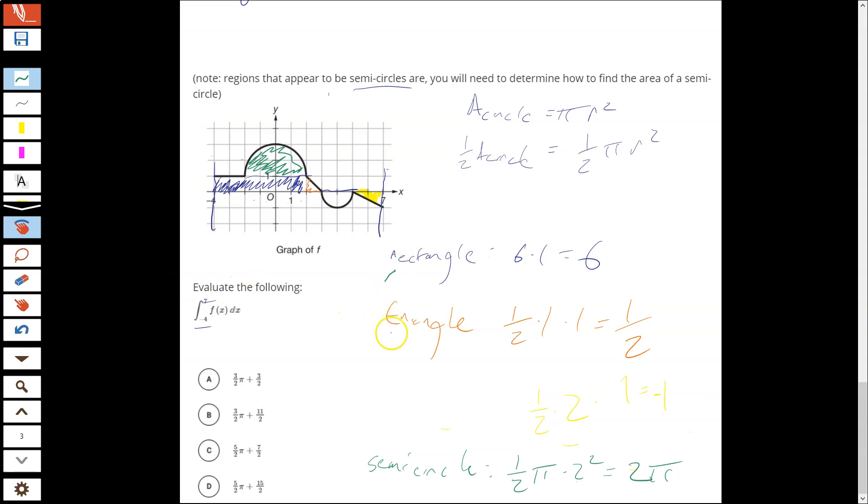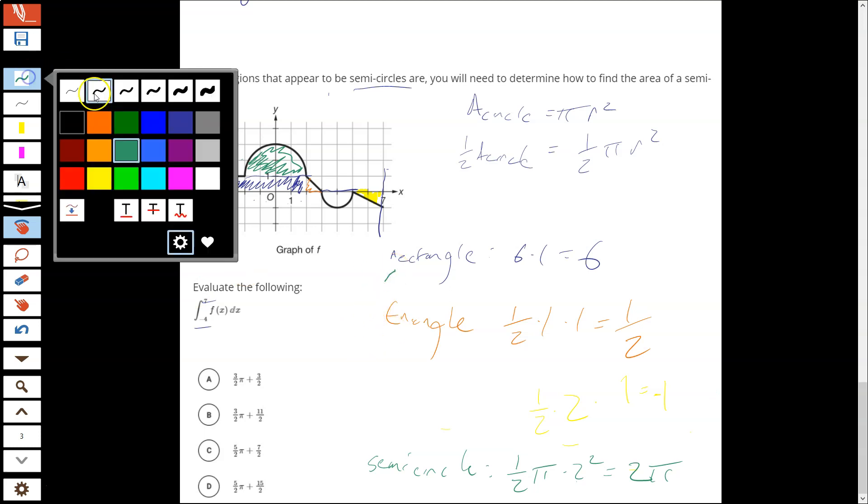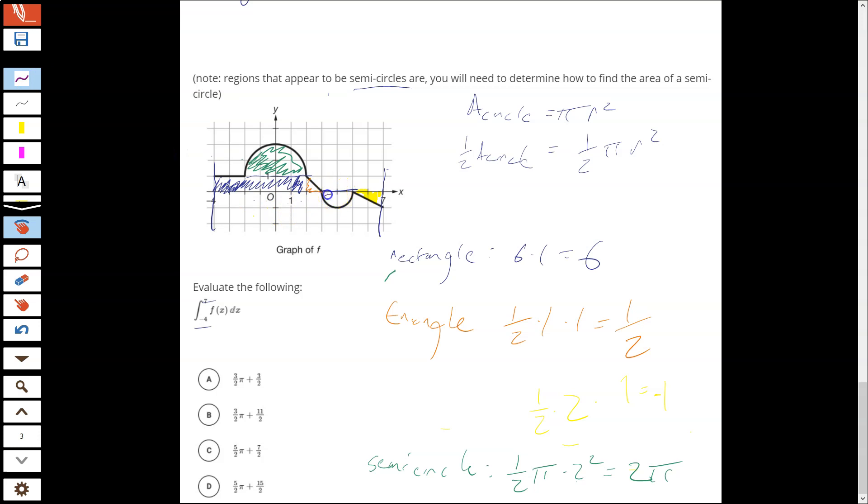And then we just have that last region there. Purple. And that has a radius of 1. So, almost out of space, 1/2 times π times 1². So that really is just 1/2 π. And that's going to be negative because this region is below the x-axis. So make sure you caught that.